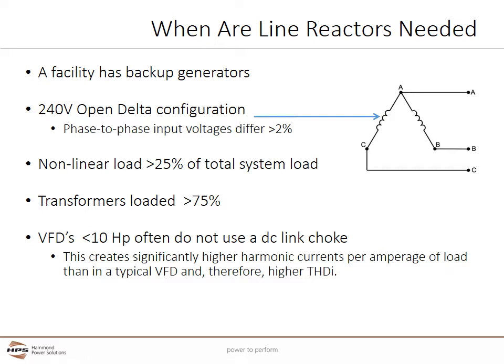If the transformers are loaded more than 75% of the rated nameplate, line reactors should be considered. VFDs less than 10 horsepower often do not use a DC link choke. This creates significantly higher current harmonics per amperage or load than in a typical VFD, and therefore higher total harmonic current distortion can occur, and line reactors should be considered.